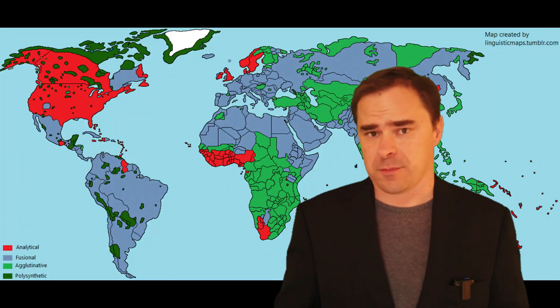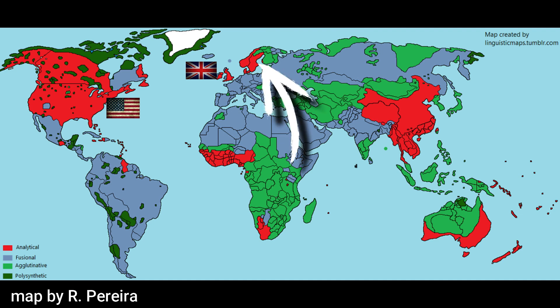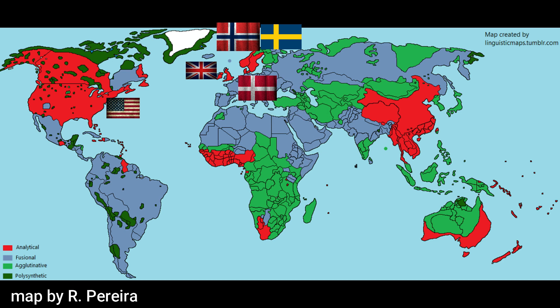Where are analytic languages spoken? They're all over the place. English is an analytic language, and it probably gets this from the Scandinavian languages — Danish, Norwegian, and Swedish are all analytic. Not German or Dutch, ironically enough. Afrikaans, however, which is very close to Dutch, is an analytic language.